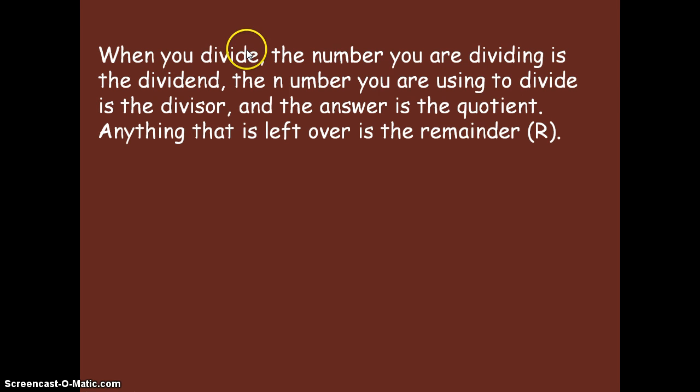When you divide, the number you are dividing is the dividend. So the number you're dividing, the bigger number, will be your dividend. The number you're using to divide is the divisor. So the smaller number is going to be the divisor, and you're going to try to find out how many times will the divisor go into the dividend.